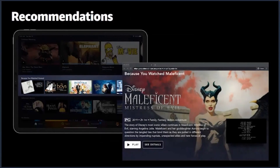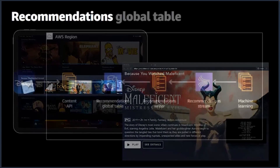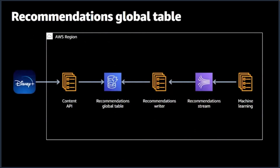A third use case is the recommendation engine. They want to show you — based on what you've watched — what other things you might want to watch. They store those recommendations inside a DynamoDB global table. Those recommendations come out of a machine learning job running their algorithms for determining proper recommendations. Those results flow through a stream and a provider and end up in the recommendations global table for your account, so they can be pulled very quickly when you log into the app and go to the homepage. The request comes through their content API, just like the previous two use cases.